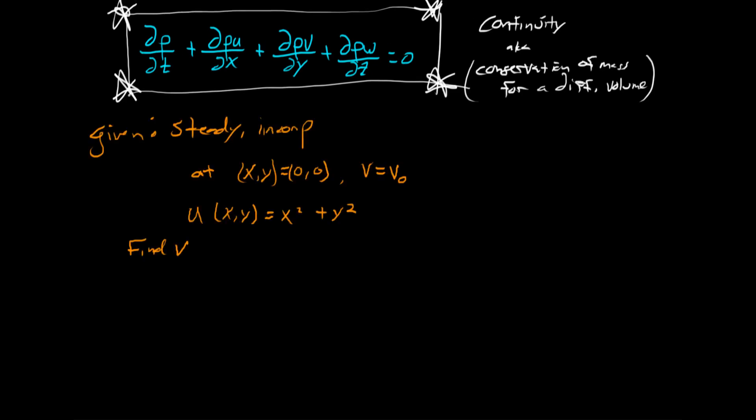What we're going to be trying to work out this time is for a steady and incompressible flow, we're given the u velocity and the value of the velocity at the origin, but we don't know v.